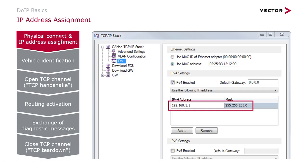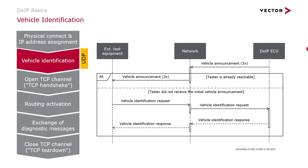First, after the connection, you need to make sure that the IP address assignment is done correctly. How to configure this in CANoe in the TCP/IP stack's configuration is covered by a different video on this channel. After the IP address assignment, once the ECU is powered up, it will send three times a vehicle announcement message.